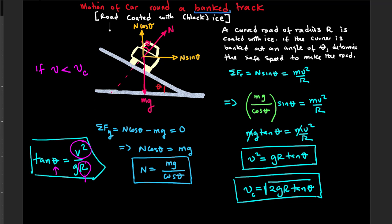If the speed of the car is less than the critical speed, the car will skid inwards. In order to prevent that, the road must exert a frictional force outwards. On the other hand, if V is greater than VC, the car has a tendency to skid outwards, and the road must exert a frictional force inwards to prevent it. So let us analyze this situation.